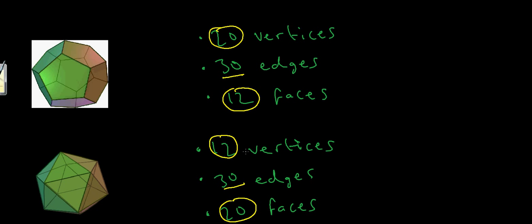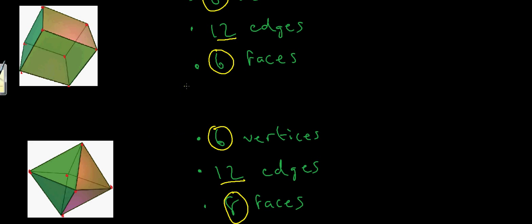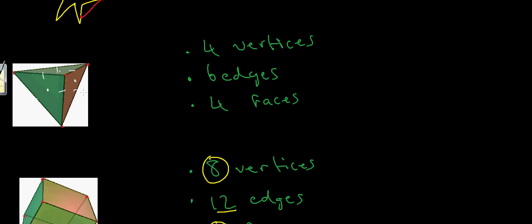We call this relationship duality. We say that the dodecahedron and the icosahedron are dual platonic solids, and also the cube and the octahedron are dual platonic solids. You might notice that I've left the tetrahedron out — well, that's because the tetrahedron is actually dual to itself, and we call this notion self-duality. So the tetrahedron is self-dual.